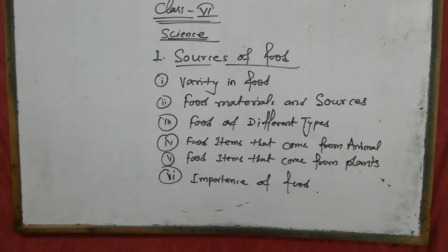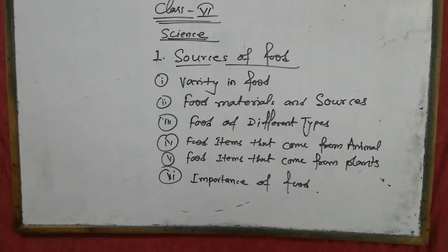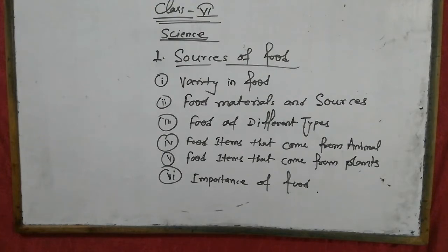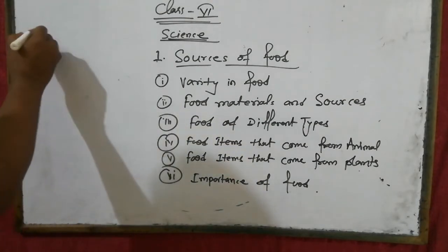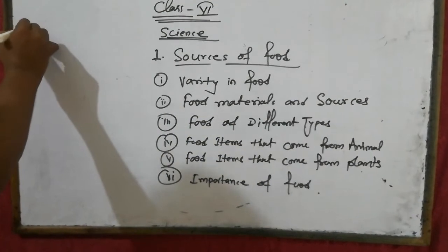Like some animals eat plants and plant products. Who eats plants and plant products? The answer is cow, deer, buffalo. These animals are called herbivorous. Herbivorous animals are those that eat only plants and plant products.